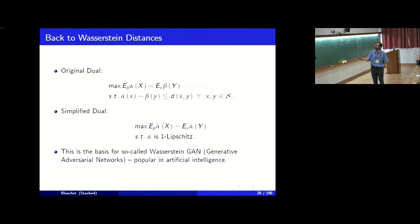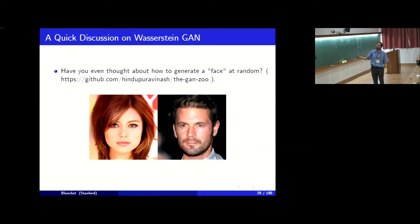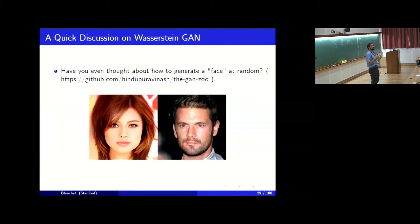The Wasserstein GAN generates pictures of people that do not exist. The machine generates random samples from a training set of images of people and somehow learns what those images look like, producing new realistic samples. The network parameterizes distributions using this Kantorovich-Rubinstein duality with the Lipschitz-one constraint imposed on the discriminator network.